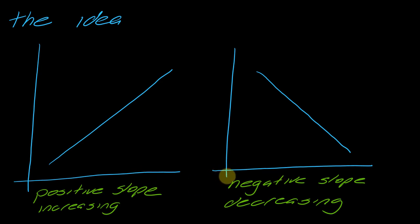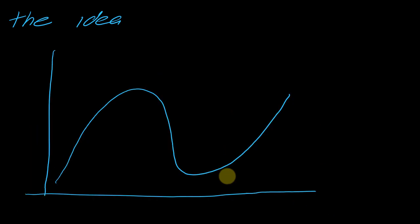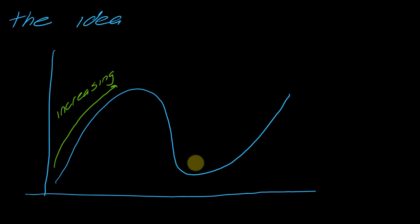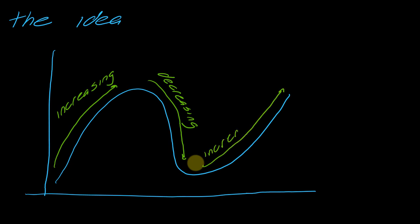If I were to make this look a little more complicated, we still probably have the intuition behind this. I have this function here, and as I go from this point to this point, this is no longer a slope — slopes only exist with lines. But this function is increasing here, then decreasing here, then it goes back to increasing. So you already have the intuition for this.